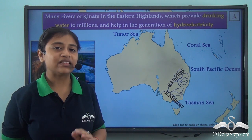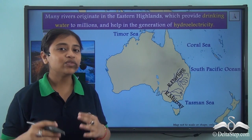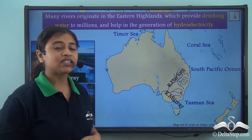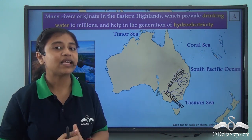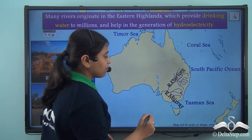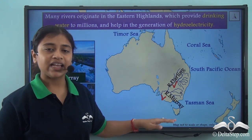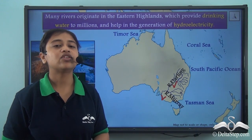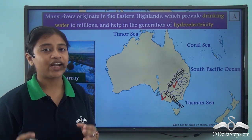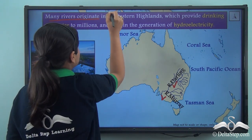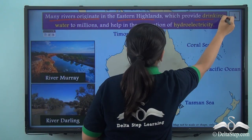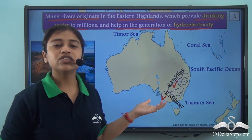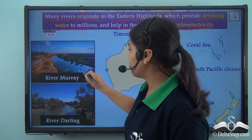The Eastern Highlands region features unique geological formations and is home to important mineral resources. Two major rivers of Australia originate from the Eastern Highlands: River Murray and River Darling. River Murray is a perennial river providing continuous water supply to the region, while River Darling is the longest river of Australia, also helping in the generation of hydroelectricity. These rivers provide drinking water to millions of people.